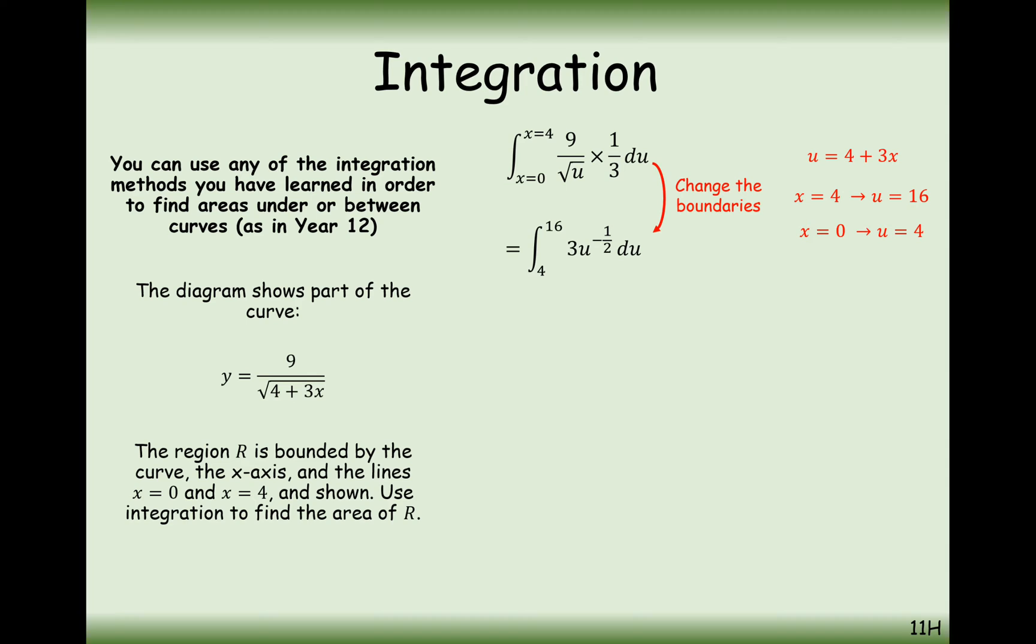Now I'm going to do my integration. Increase the power by 1, divide by the new power. So in this case, the minus half is going to increase to a half, and I'm going to divide by a half. 3 divided by a half is 6. Then my boundary is going to be between 16 and 4.